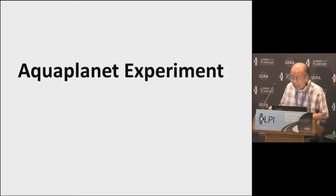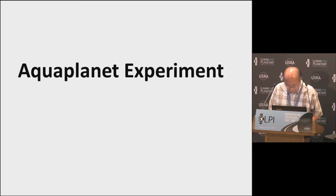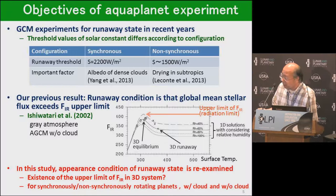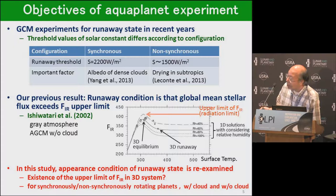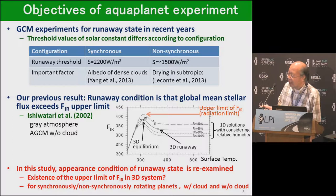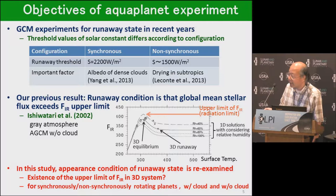I will show the result of the aqua planet experiment. The aim of the aqua planet experiment is re-examination of the runaway condition. In recent years, many GCM experiments have been performed, and it has been shown that threshold values of solar constant change according to model configuration. For a synchronously rotating planet — a tidally locked planet — the threshold value becomes much bigger than in the non-synchronous case. Many factors are important for determining the threshold values. For synchronously rotating planets, the effect of cloud is important, while for the non-synchronous Earth-like case, atmospheric circulation is important.